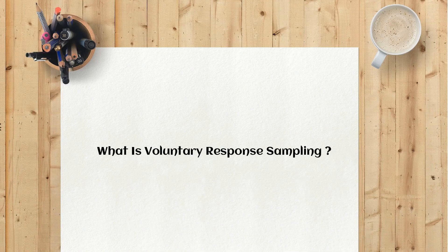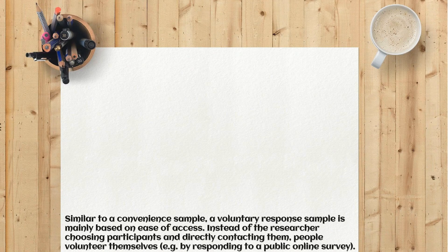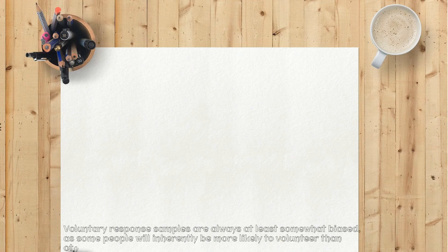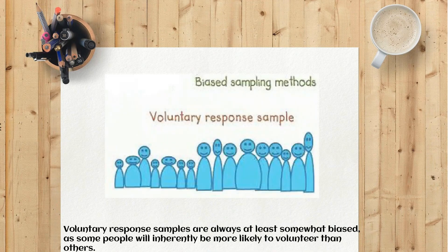What is voluntary response sampling? Similar to a convenience sample, a voluntary response sample is mainly based on ease of access. Instead of the researcher choosing participants and directly contacting them, people volunteer themselves — for example, by responding to a public online survey. Voluntary response samples are always at least somewhat biased, as some people will inherently be more likely to volunteer than others.